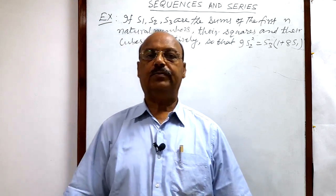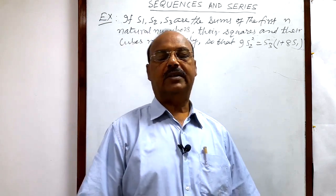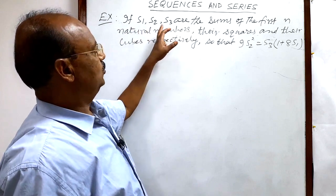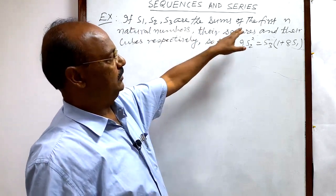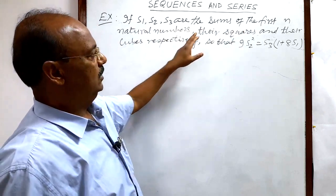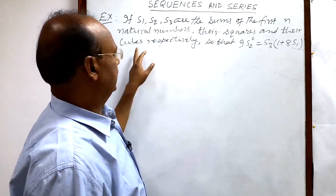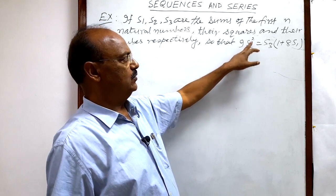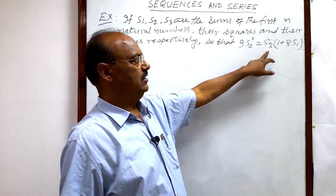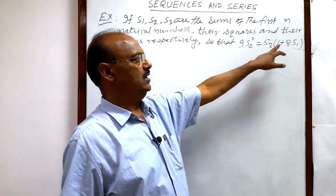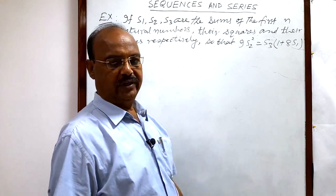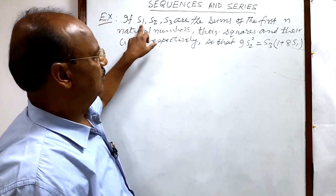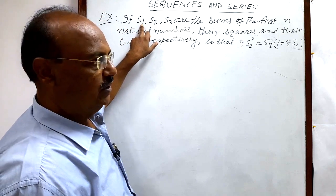Let us see a very important question from the chapter Sequence and Series. The question is: if S1, S2, S3 are the sums of the first n natural numbers, their squares, and their cubes respectively, show that 9 S2 squared is equal to S3 into (1 + 8 S1).